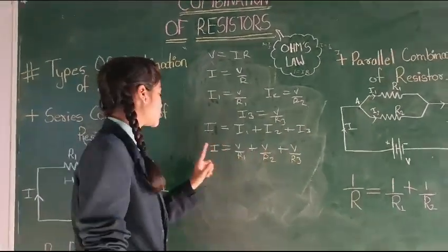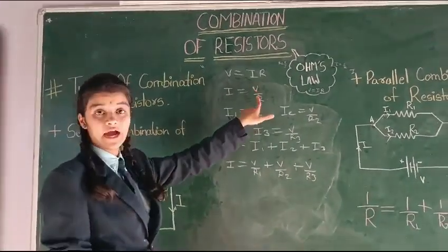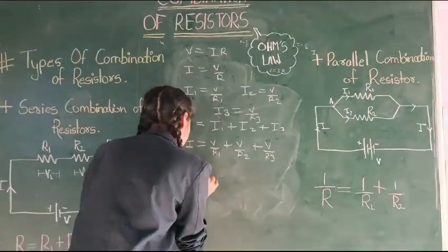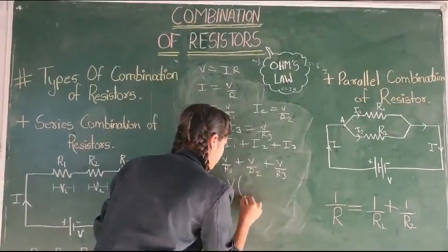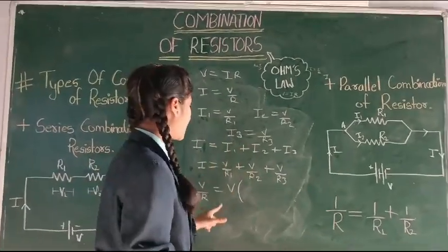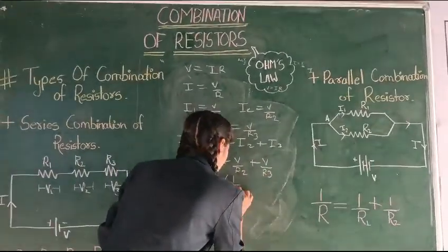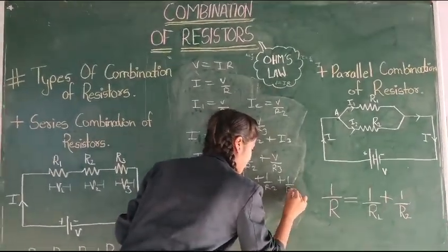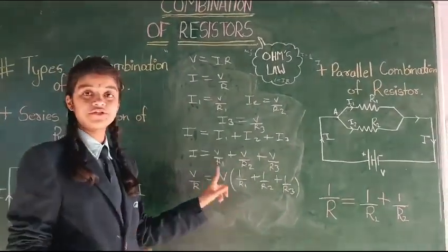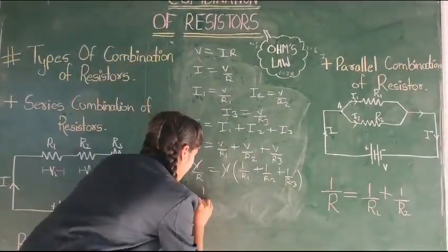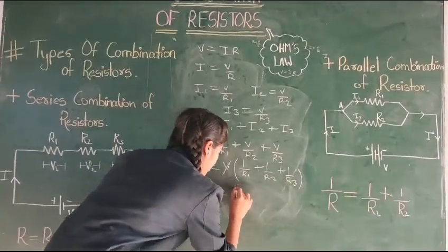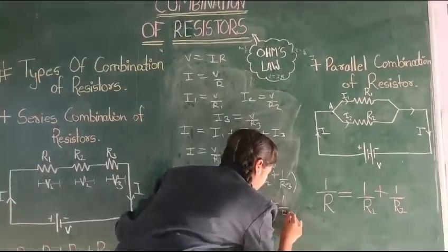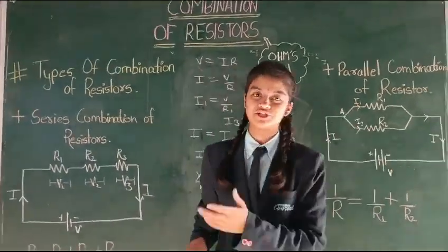From this term, we can take V as a common. For I, we can write V by R. V by R equals to V common — nothing in the numerator — it means 1 by R1 plus 1 by R2 plus 1 by R3. So, in LHS and RHS, V gets cancelled. It will become 1 by R equals to 1 by R1 plus 1 by R2 plus 1 by R3. Hence, proved the formula for parallel combination of resistors.